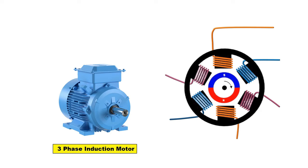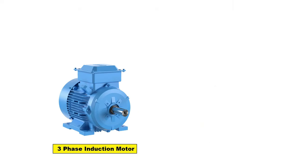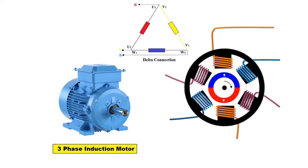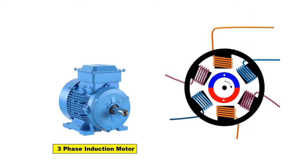Now these 6 wires you have, you can connect them by 2 ways. If you want, you can connect motor winding in star or you can connect motor winding in delta. Now there may be a doubt in your mind whether we should connect motor winding in star or in delta. You will get this answer by yourself at the end of this video. But first, let me tell you how to connect motor winding in star and how to connect in delta.